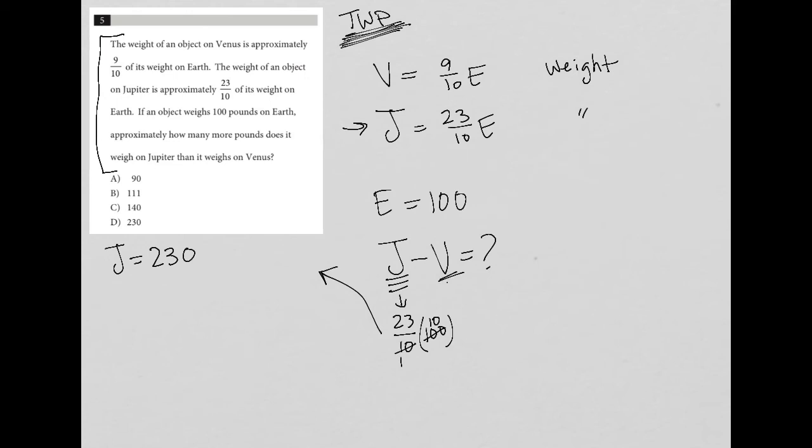Do the same thing for V. The V formula says that it's equal to 9 tenths times E. E, again, is 100 as provided by the question. I do the same simplification here, and I get that V is equal to 90.